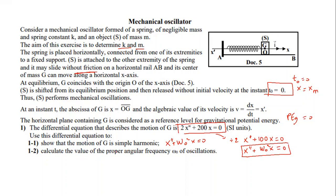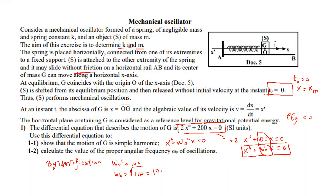To calculate the proper angular frequency ω₀, by identification of both equations, we have ω₀² = 100, which means ω₀ = √100 = 10 radians per second.